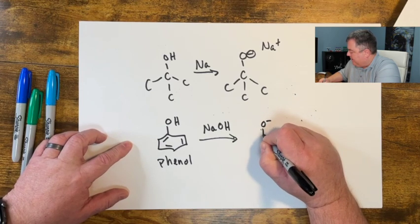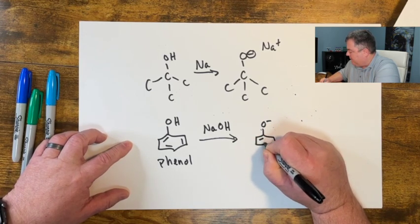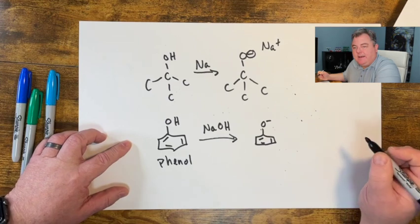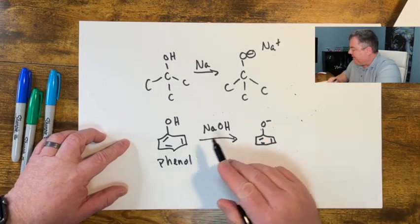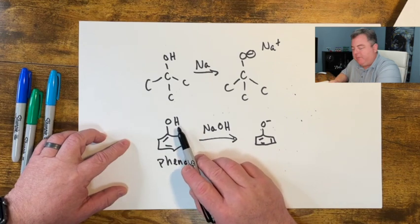And it can make the phenoxide compound, a phenol oxide, phenoxide. And that's very easy to do because this is a very acidic proton.